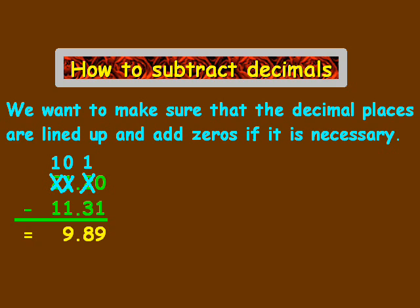So our answer in this case is going to be 9.89, and that's 21.2 minus 11.31 will be 9.89.